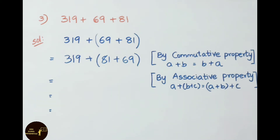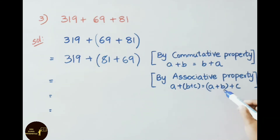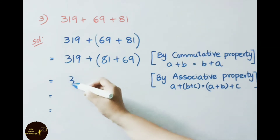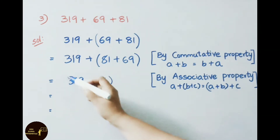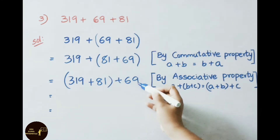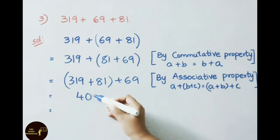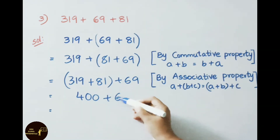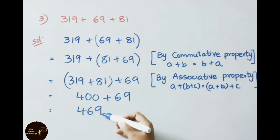Now we shall apply the associative property. A plus B plus C can be written as (A plus B) plus C. That is (319 plus 81) plus 69. 319 plus 81 gives 400, plus 69 equals 469.